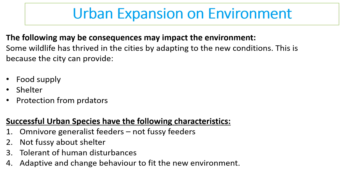Some wildlife has proven successful in cities - we can actually use the city to provide food, shelter and protection for animals. Successful urban species are generally omnivores, meaning they'll eat pretty much anything, they're not fussy about shelter, they're tolerant to human disturbances, and they adapt their behaviour to fit the environment. City foxes would be a good example.